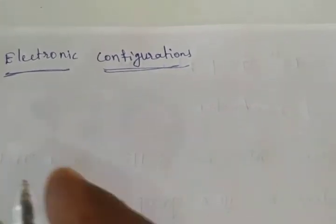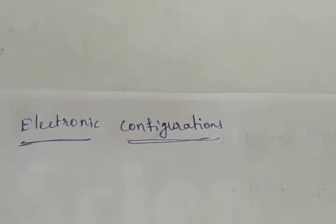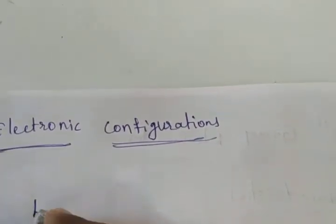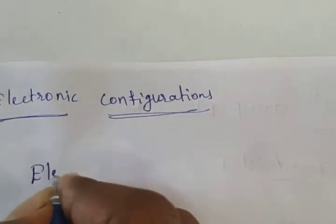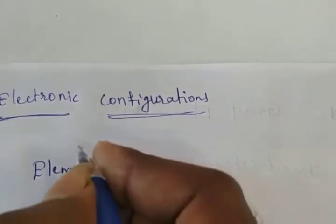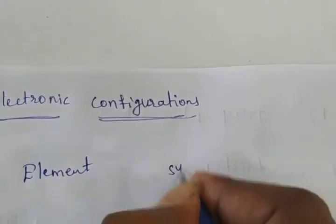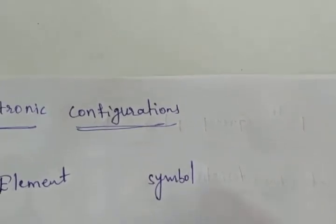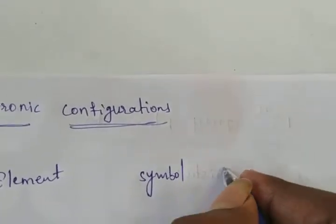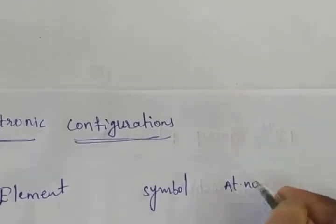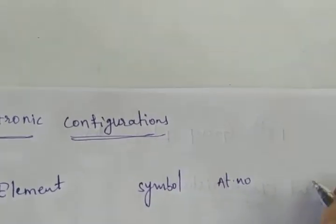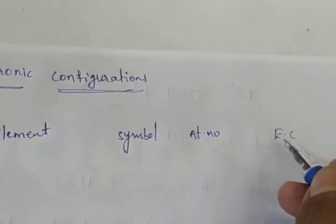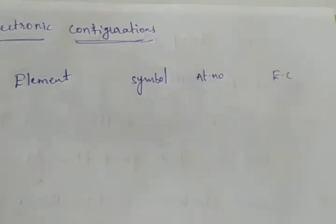Here I am writing the element names. The columns are: element name, symbol, atomic number, and electronic configuration.